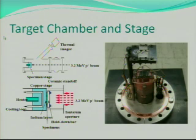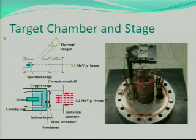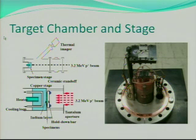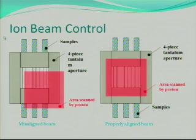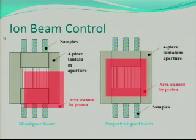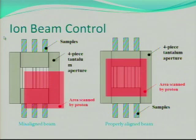The last part is the target chamber. We put the sample on the stage, and above the stage we have four apertures. Only part of the ion beam can go through the aperture and then strike on the sample. Why do we need the aperture? Because we want to align the beam line. The four apertures are electrically isolated, so when the four apertures have the same current, the sample behind the apertures will have the same dose rate.